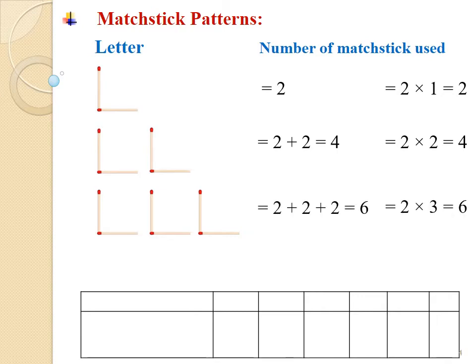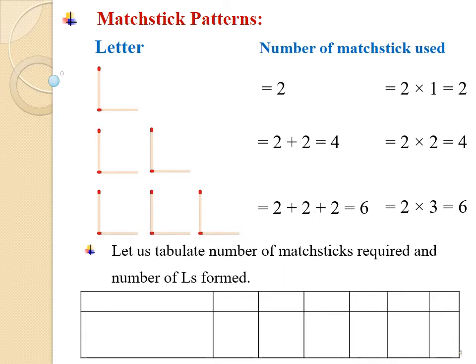We observe that 1 L is formed using 2 matchsticks, 2 Ls are formed using 4 matchsticks, and 3 Ls are formed using 6 matchsticks. Let us tabulate the number of matchsticks required. Number of Ls formed: 1, 2, 3, 4, 5 and so on. Number of matchsticks required correspondingly.